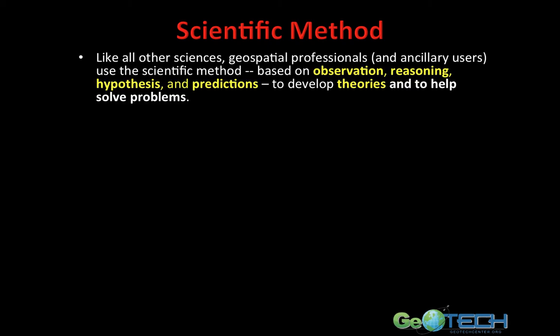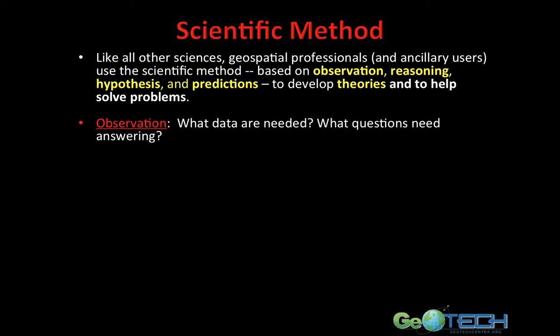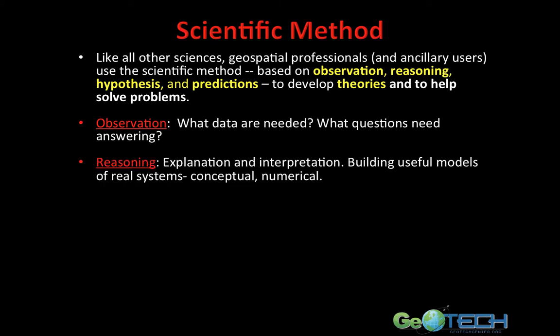One of the things we do in science is use something called the scientific method. Like all other sciences, geospatial professionals and ancillary users use the scientific method. The method is based on observation, reasoning, hypotheses, and predictions to develop theories and help solve problems. We collect data, come up with questions that need answering, and use observational data to answer those questions. There is reasoning, explanation and interpretation, and we build useful models of real systems — both conceptual models and numerical models — for prediction and to try to explain observations.